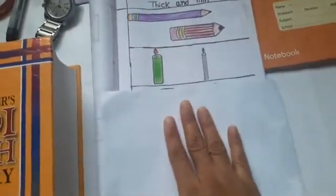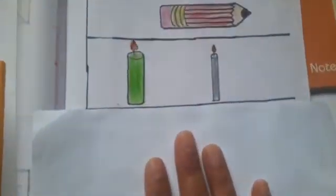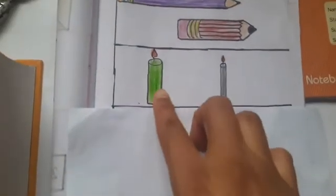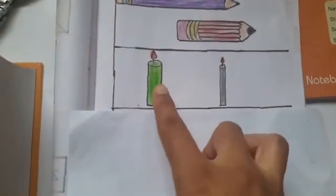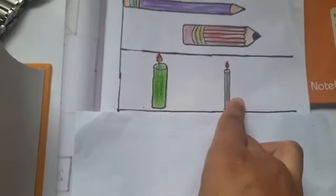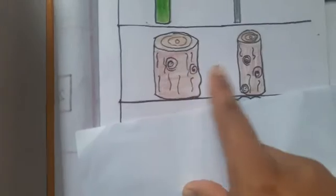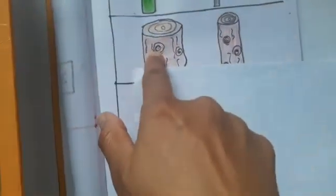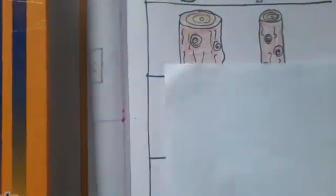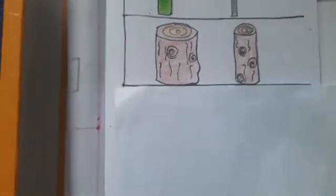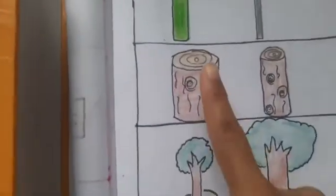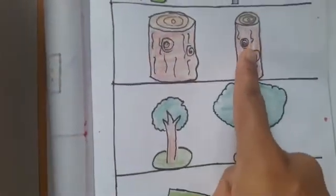Okay, now the next example. What is this? Candles. These are two candles. This candle is thick and this candle is thin. Next example, this is wooden logs. What are these? Wooden logs. This is thick and the other one is thin. This log is thick and this log is thin.